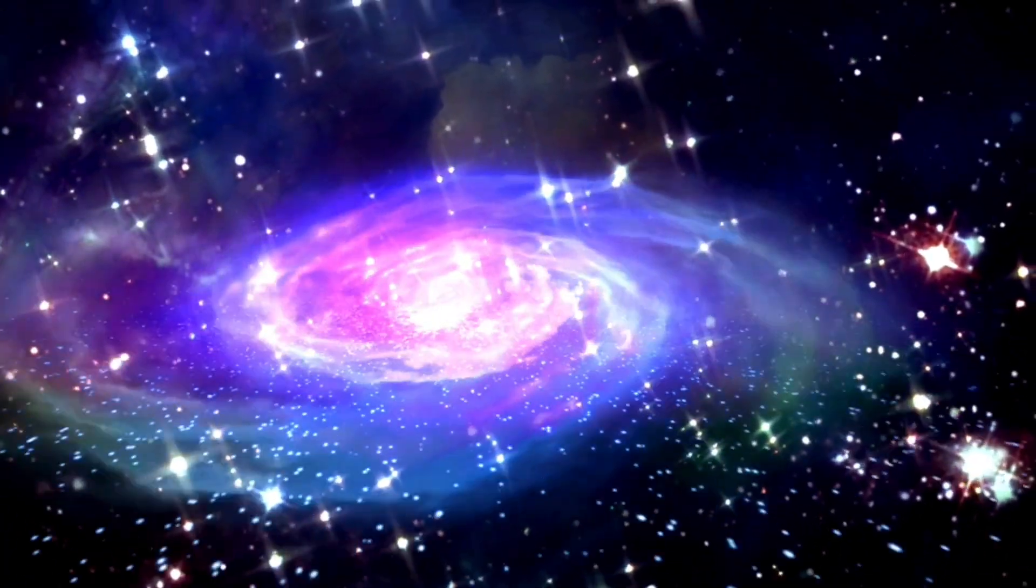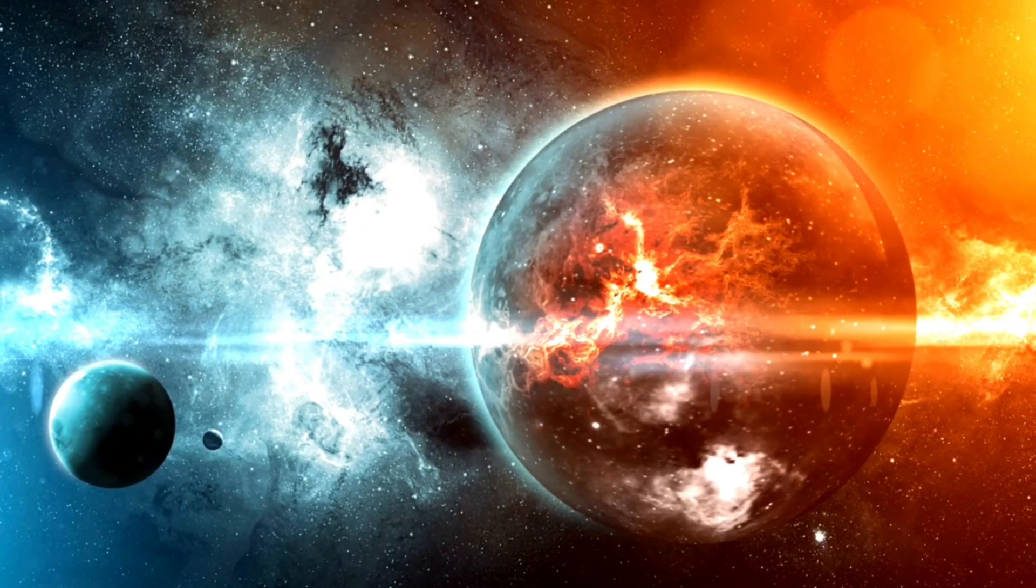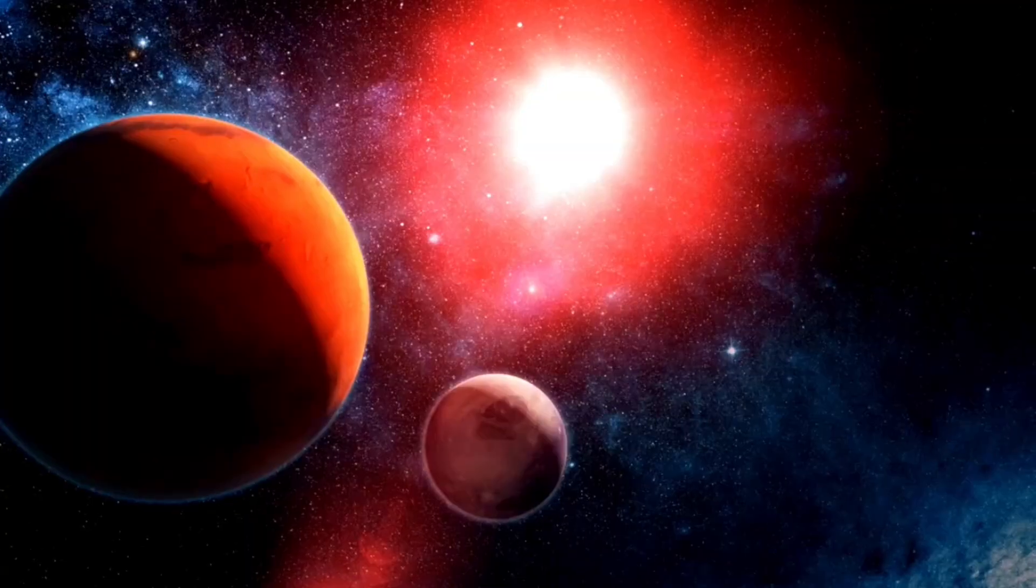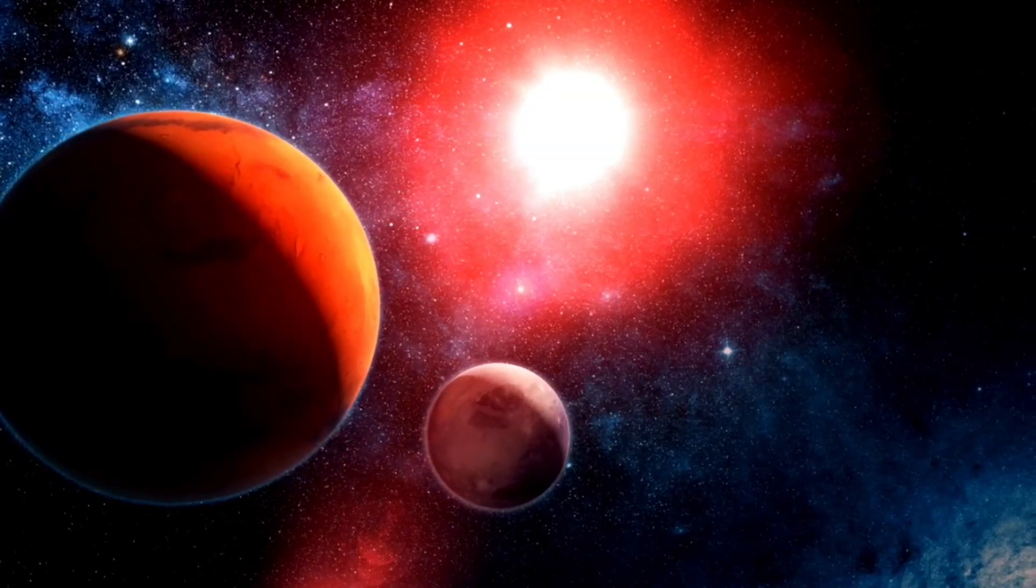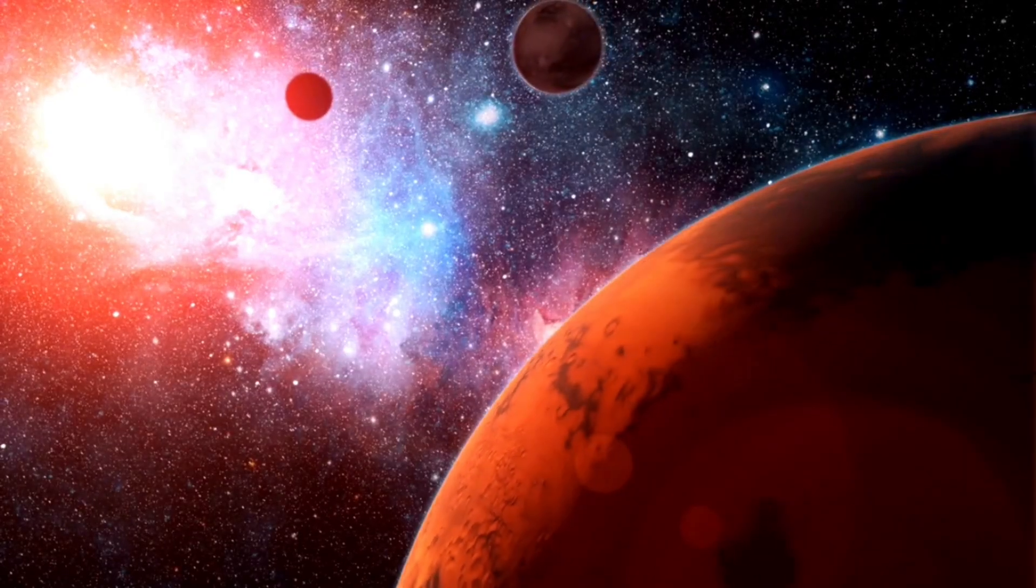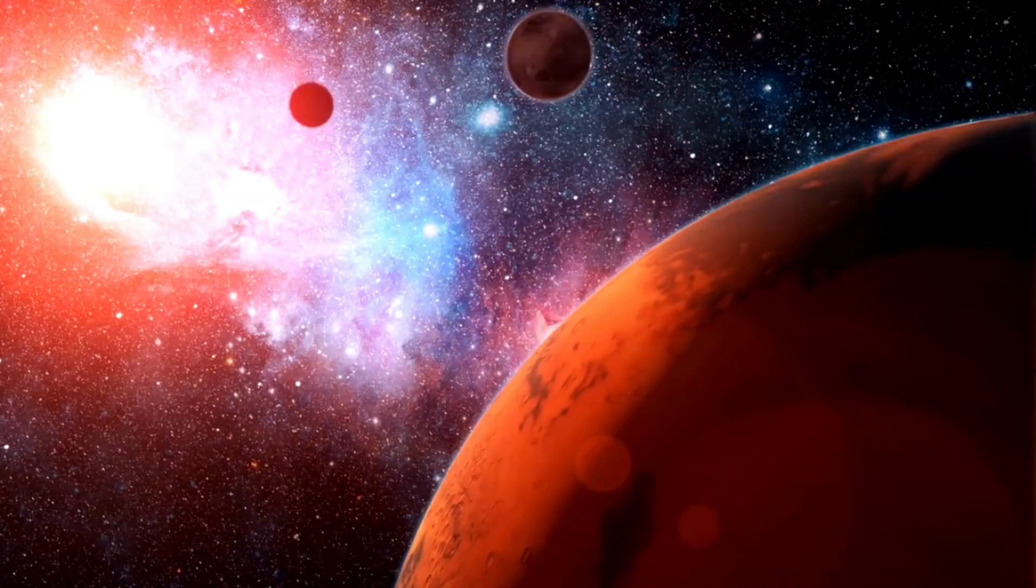In simulations, when they overlaid Earth's own developmental timeline across Proxima B's inferred paths, the parallels became undeniable. One scientist in a closed briefing described it as a delayed echo of Earth's evolution, like we're looking at ourselves a billion years behind or ahead.